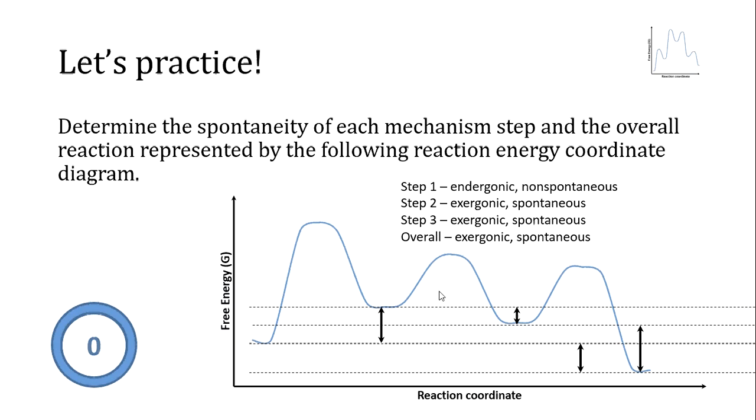Step two is exergonic because the intermediates after step two are lower in energy than the intermediates after step one. Step three is exergonic because the products are lower in energy than the intermediates after step two.